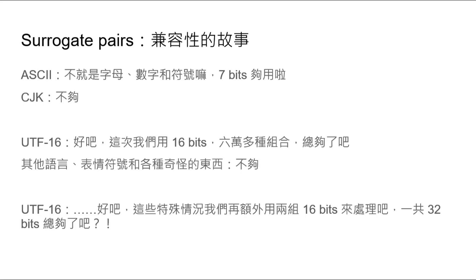但是UTF-16其實它有考慮到這個問題，所以它有一個額外的定義，就是這裡所說的surrogate pair。Surrogate pair就是如果你16個bit不夠用的話，我們就用兩組16bit，一共32bit，來進行這些奇怪的東西的encoding。這個時候你就按照它的奇怪的定義去parse，這些額外的東西就總夠用了，因為你有32bit。